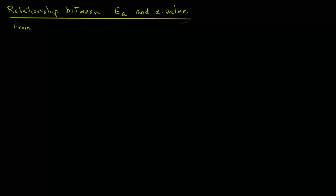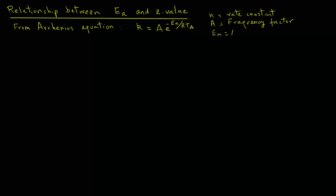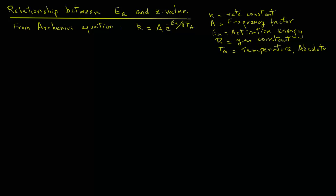We know from the Arrhenius equation that rate constant k equals A times e raised to the power minus Ea over RTa, where k is the rate constant, A is the frequency factor, Ea is the activation energy, R is the gas constant, and Ta is temperature in absolute. Note that this value of temperature is in absolute, as we will be making some observations later when the calculations involve temperature.